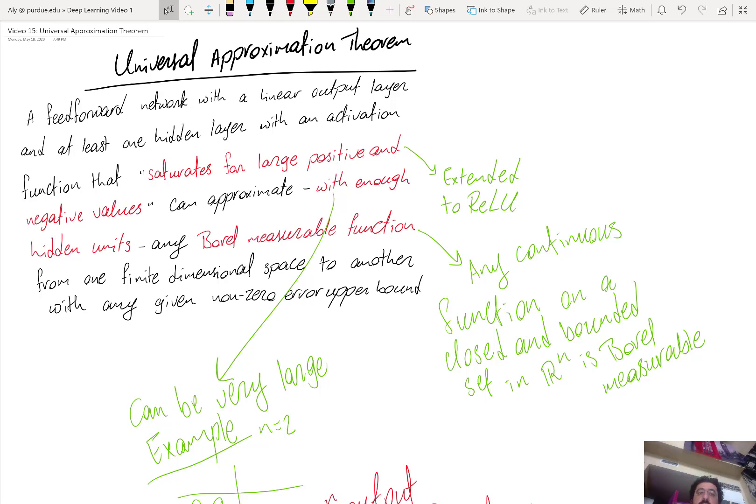So a feed forward network with a linear output layer and at least one hidden layer with an activation function and that activation function has the following property. It saturates for large positive and negative values. So this is a little counterintuitive.